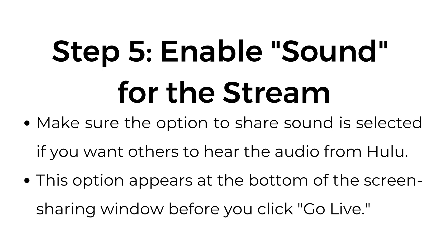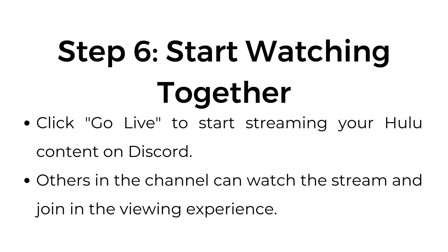Step number five, enable sound for the stream. Make sure the option to share sound is selected if you want others to hear the audio from Hulu. This option appears at the bottom of the screen sharing window before you click go live.